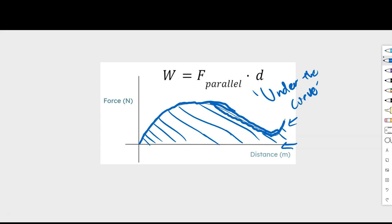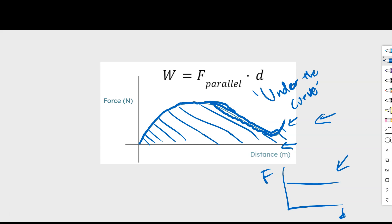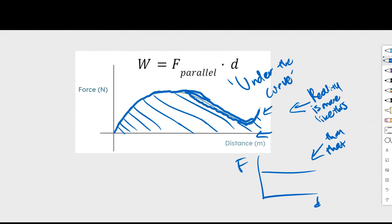Sometimes forces are not nice, neat, constant forces. If you were to plot force over a certain distance, it's very rare to actually have a constant force. All of regular physics is based on the assumption of constant force, and often an average or constant force is fine for calculations — but not always. Think about someone hitting a baseball with a baseball bat. The force would look more like a curved function than a constant one. With that added complexity, if we can model reality more correctly, we can better understand nature and better predict what happens.